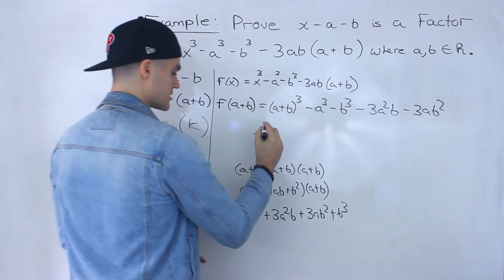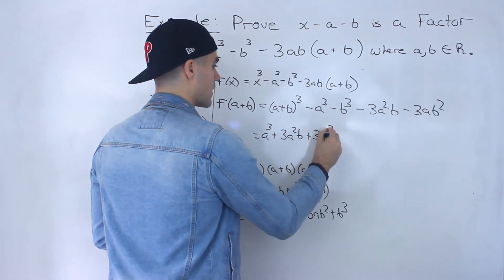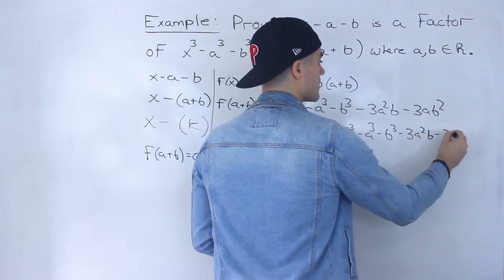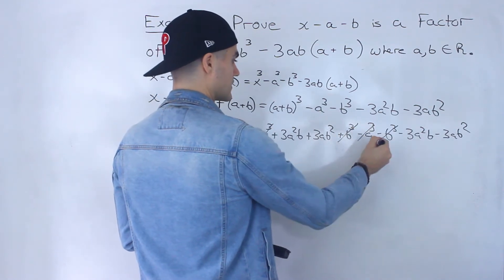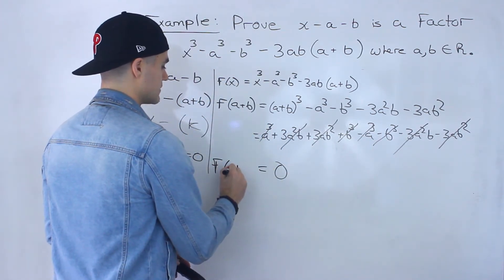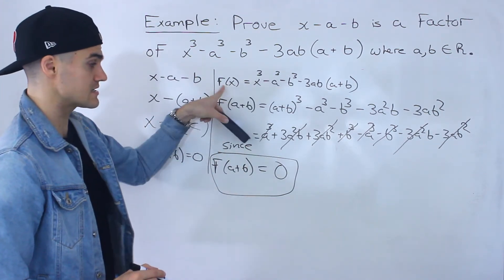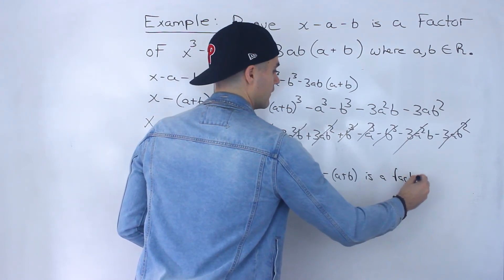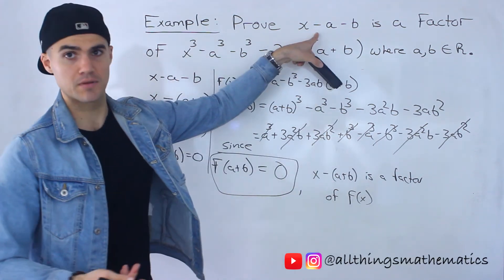If I plug that expansion in for (a plus b) cubed, notice that everything nets out. We have a cubed plus 3a squared b plus 3ab squared plus b cubed, then minus a cubed, minus b cubed, minus 3a squared b, minus 3ab squared. Everything cancels: a cubed cancels, b cubed cancels, 3a squared b cancels, and 3ab squared cancels — leaving 0. Since f(a plus b) equals 0, it means x minus (a plus b) is a factor of f(x) by the factor theorem. And x minus (a plus b) is the same as x minus a minus b, which is the original format we were given.